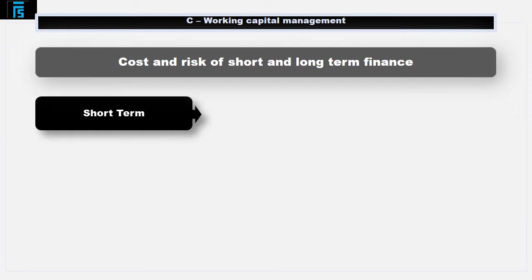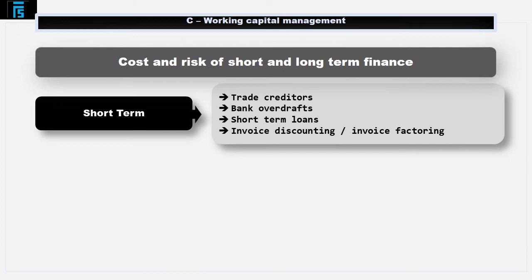In the context of working capital, sources of short-term finance include trade creditors. When organisations buy from suppliers, usually they will not pay up front — instead, they will receive the goods on credit and pay after 30 days or whatever their supplier's terms of trade are. This is a free source of short-term finance. Sometimes organisations will offer discounts for early payment, and for very big creditors, organisations should measure these discounts against the cost of financing the working capital. Although this is a free source of finance, organisations should not abuse it, as it will result in poor supplier relations and the reduction of credit terms.